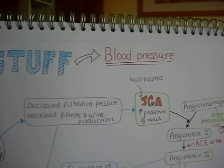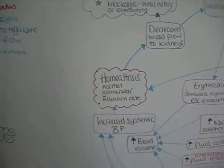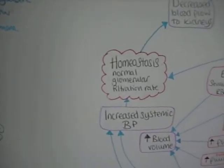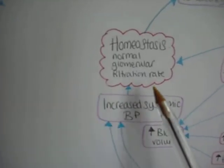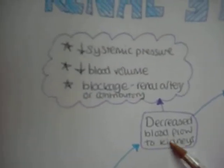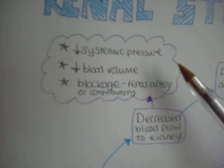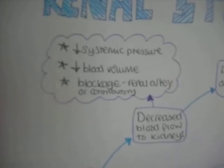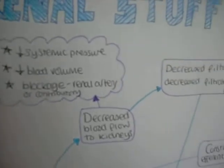Looking at blood pressure regulated by the kidneys, we start with homeostasis where we have a normal glomerular filtration rate. A decreased blood flow to the kidneys can be caused by either decreased systemic pressure, a decreased blood volume, or a blockage in the renal artery or a contributory factor.